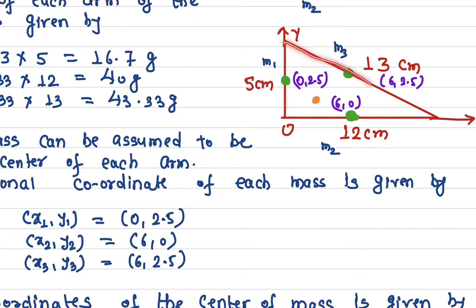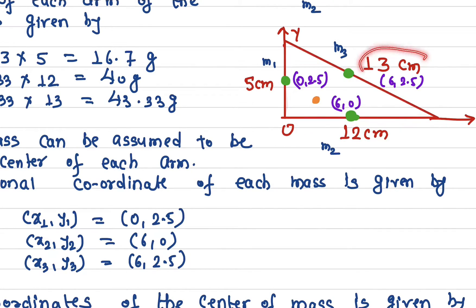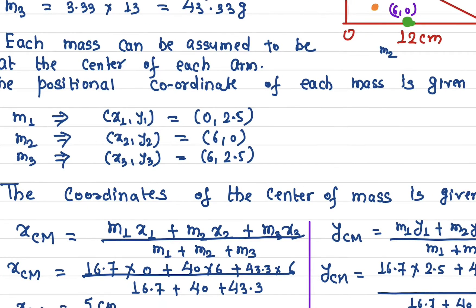For the 13 centimeter hypotenuse, the center of mass is located exactly at its middle. That means this length is 6 centimeters and this height is 2.5 centimeters, so the position of the center of mass of this rod is at 6 centimeters and 2.5 centimeters. Taking the projection on the x-axis gives 6, and on the y-axis it gives 2.5.